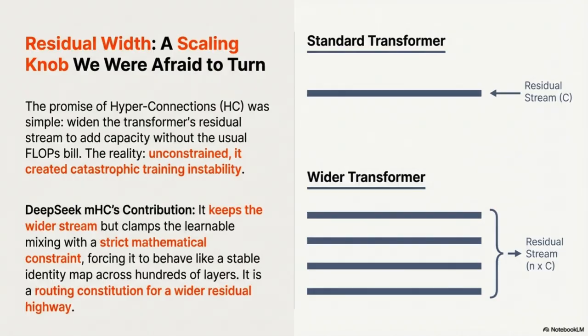DeepSeek MHC takes that unstable idea, keeps the wider stream, but clamps it with a strict mathematical constraint, forcing it to behave like a stable identity map even across hundreds of layers. We're going to explore that architectural solution and also why the sheer amount of systems engineering needed was just as critical.